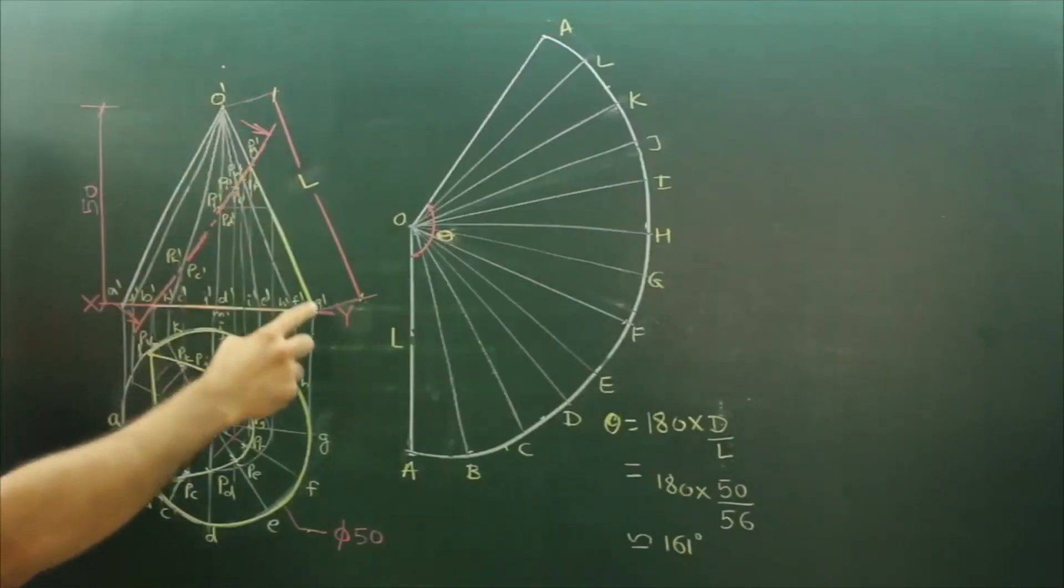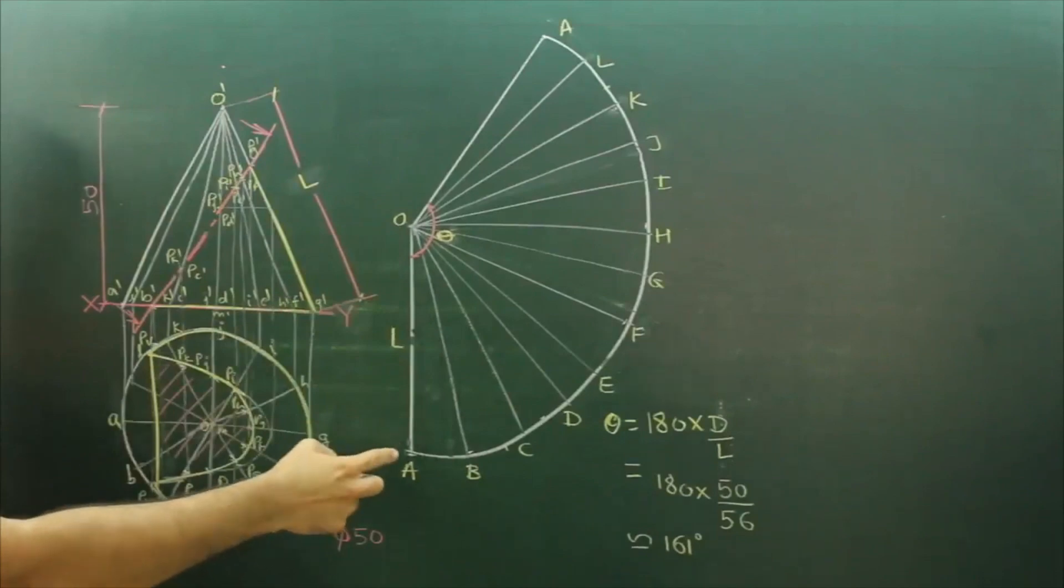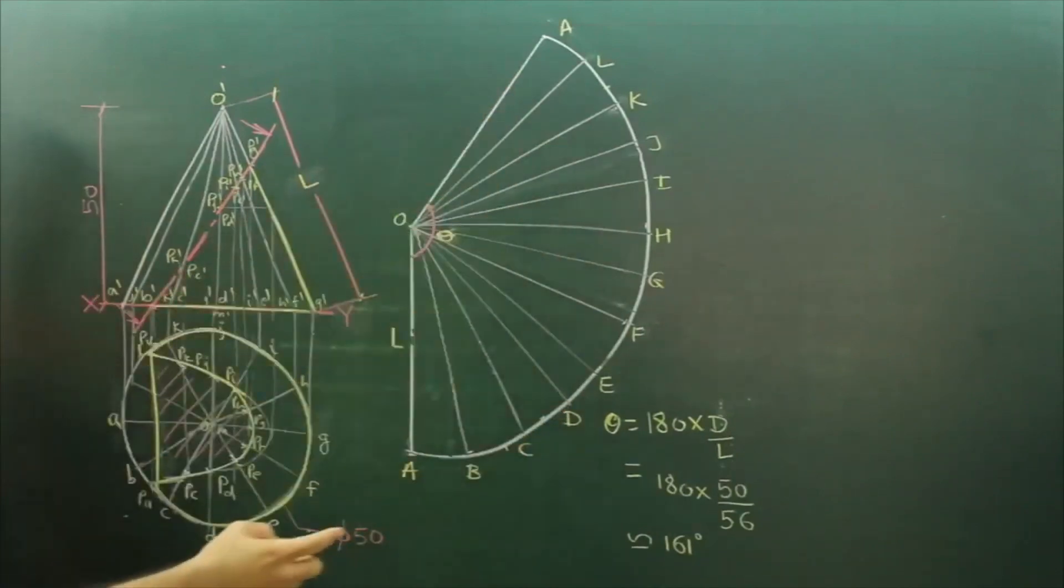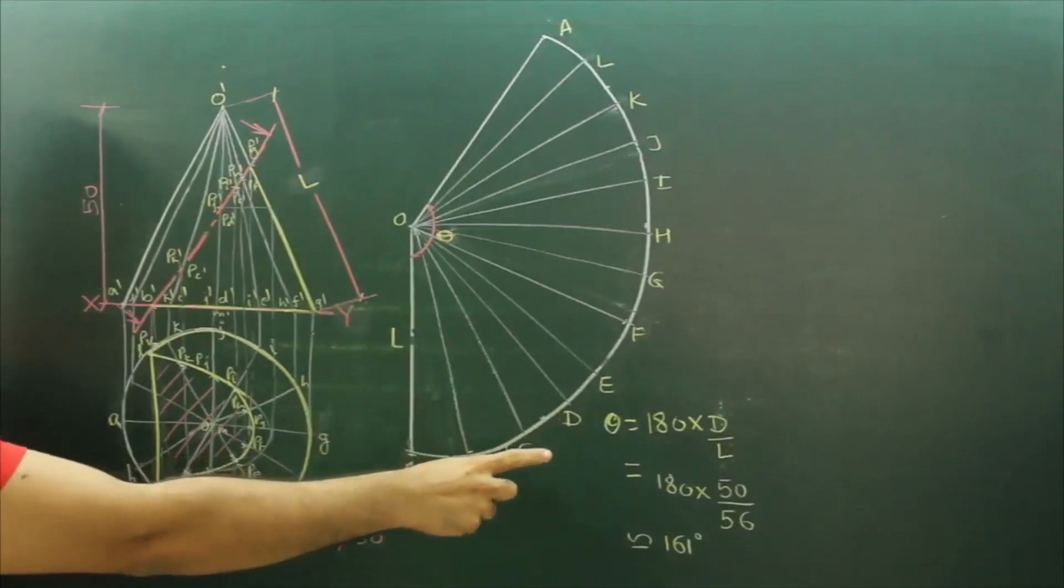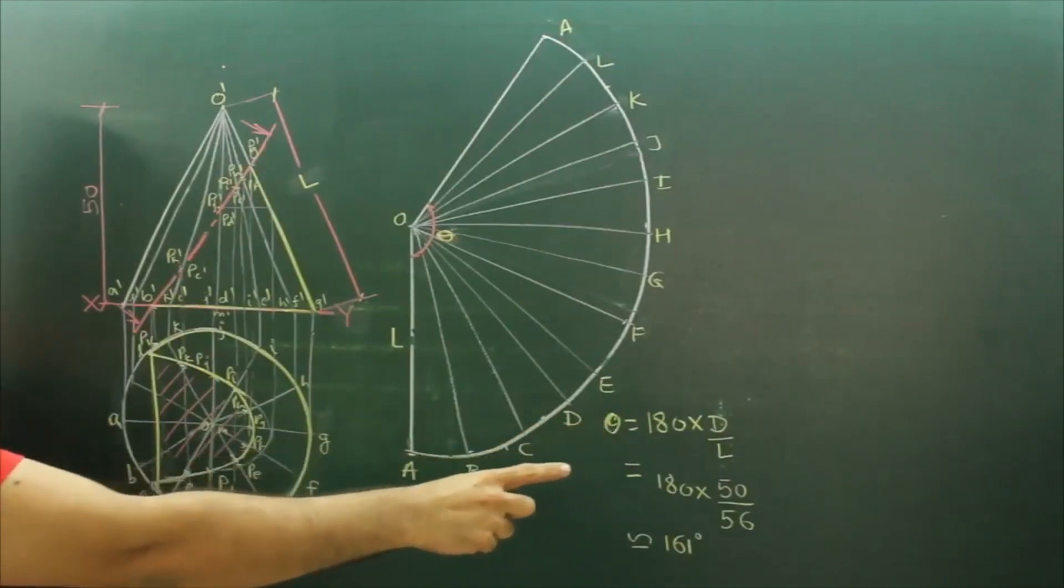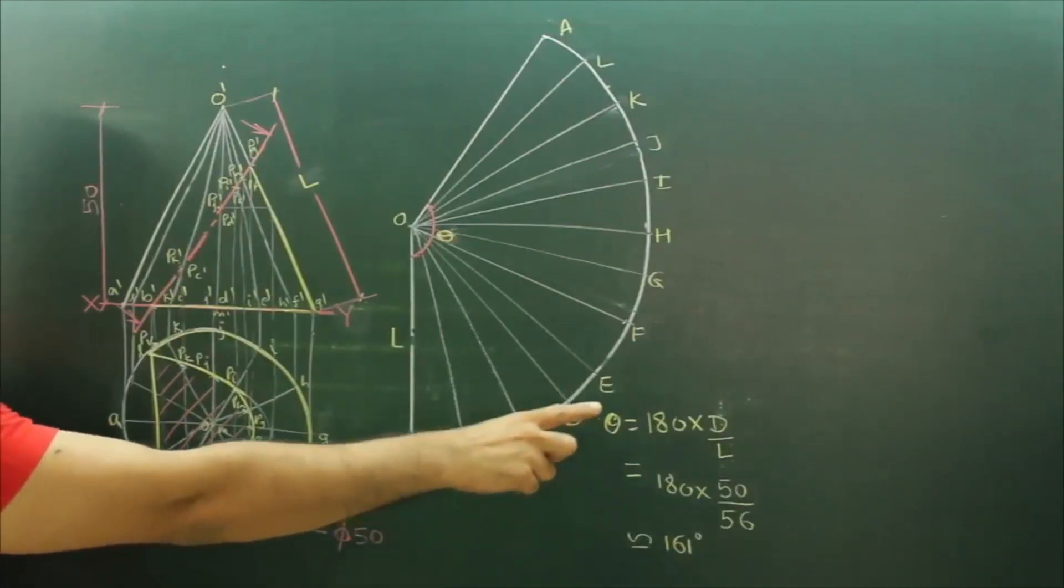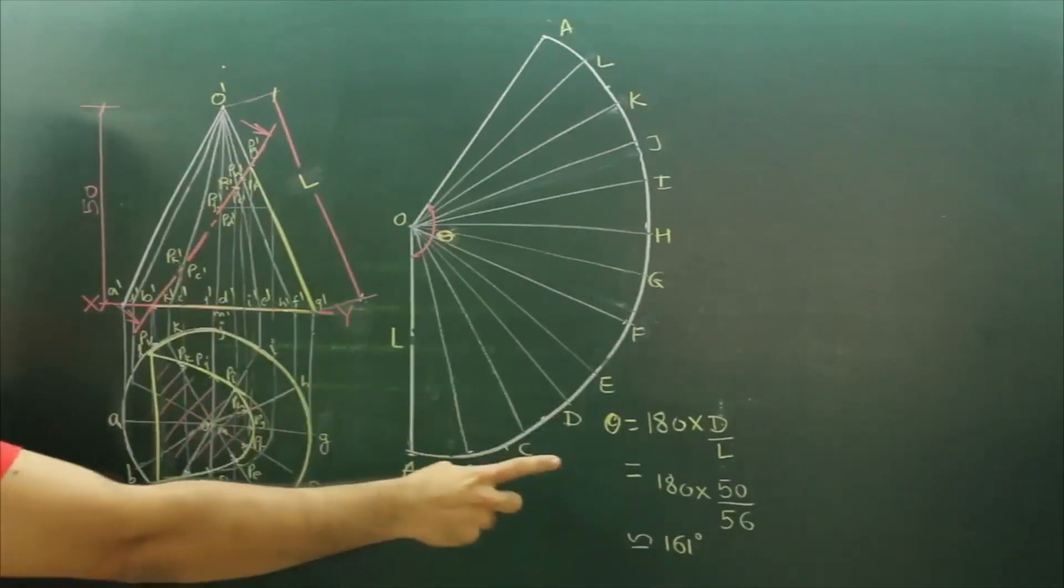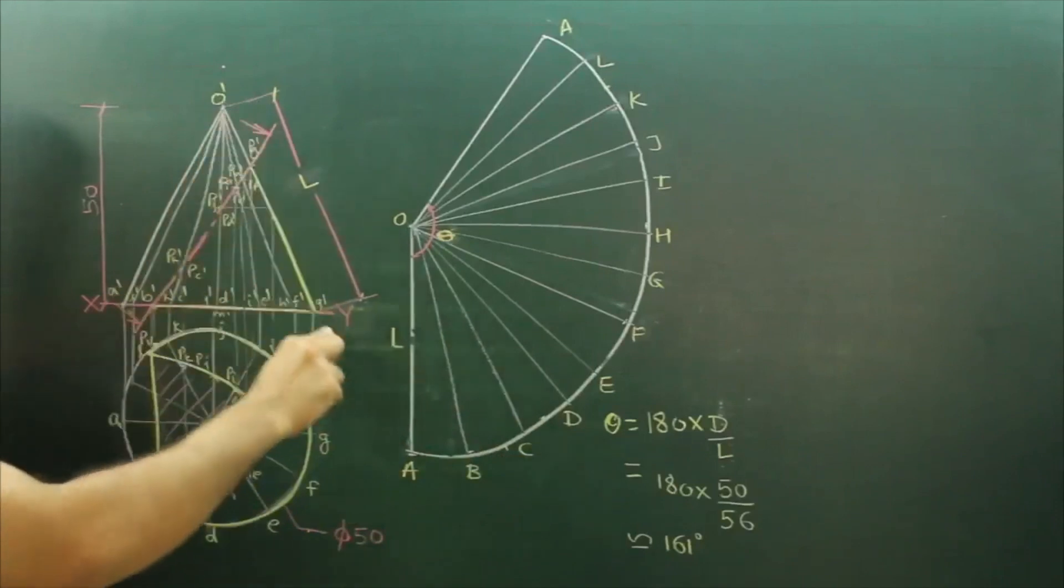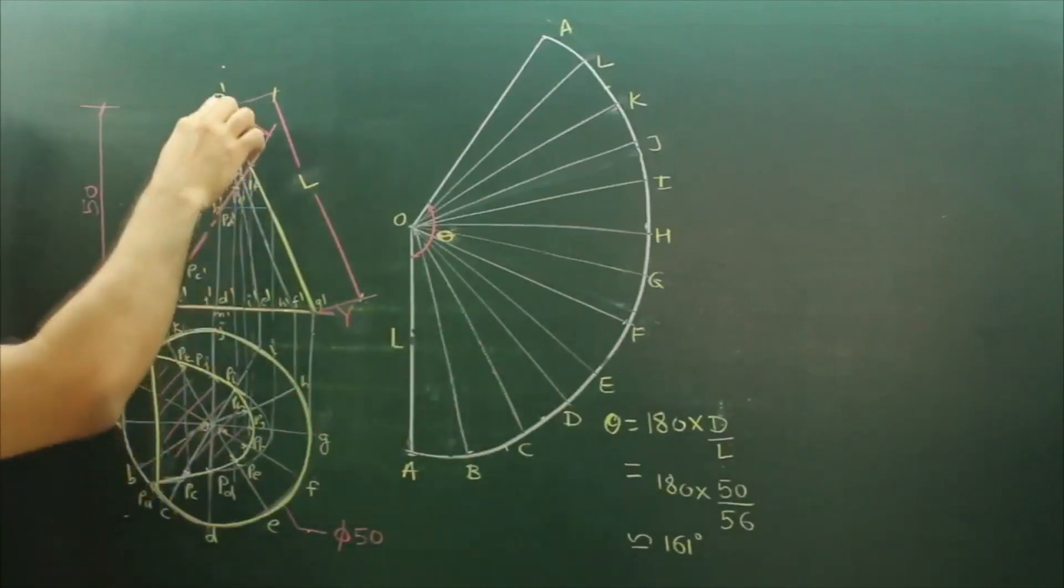Welcome to technical drawing. Today we'll see development of a cone using true length. The formula is theta equals 180 times d divided by l, where d is the diameter (50) and l is the slant length (56).